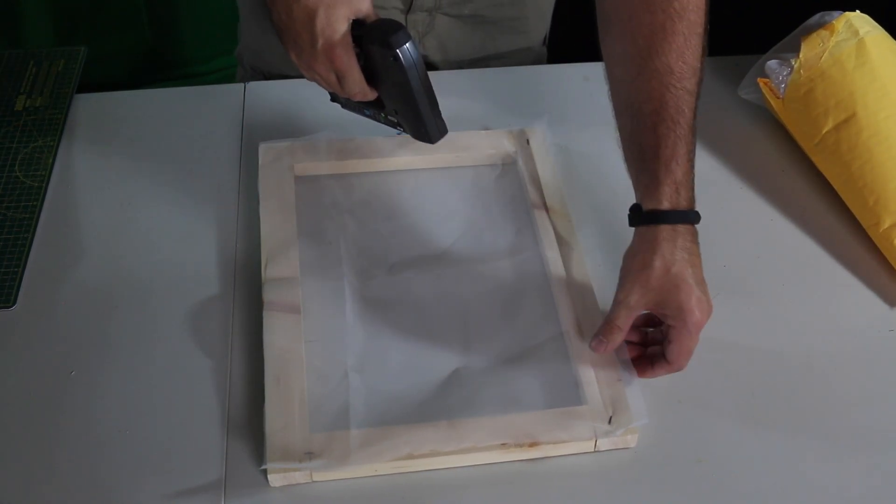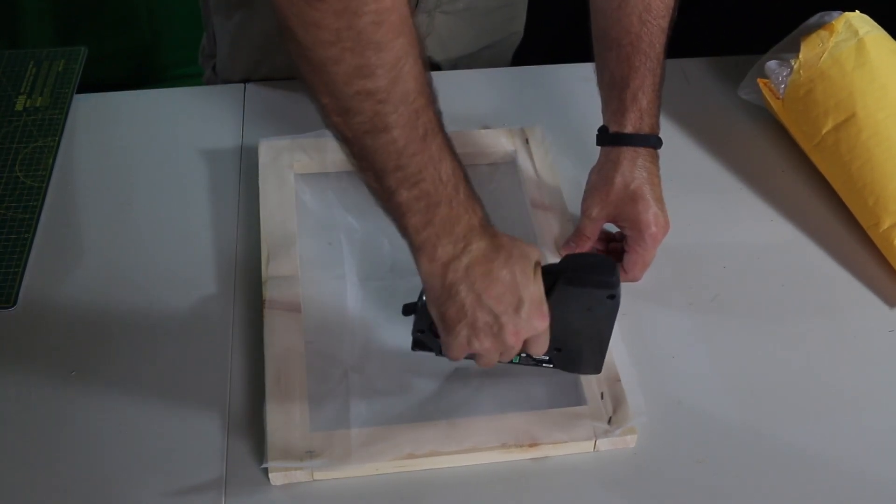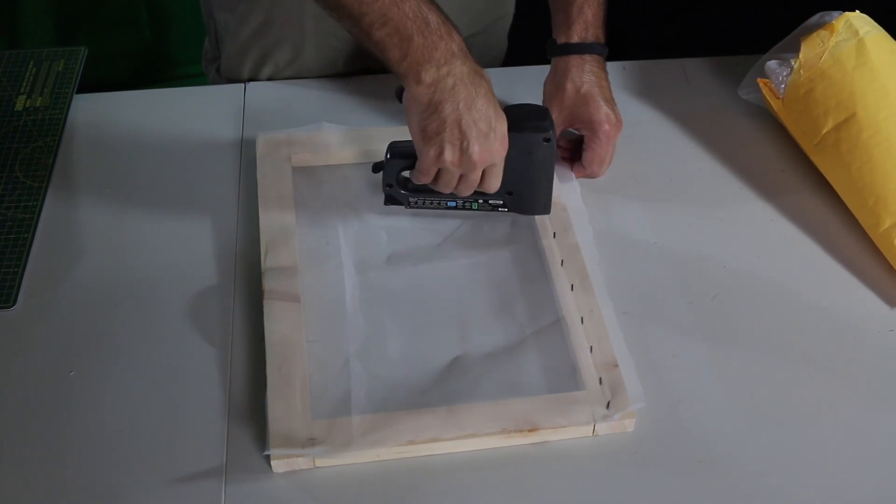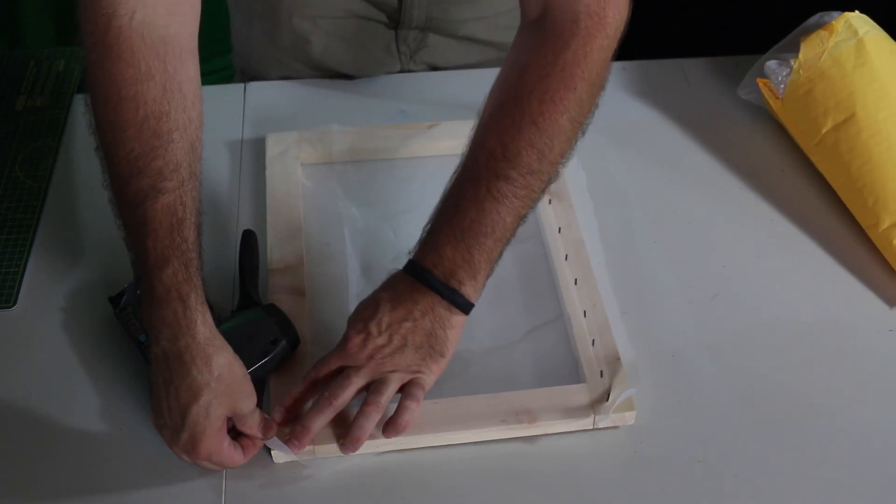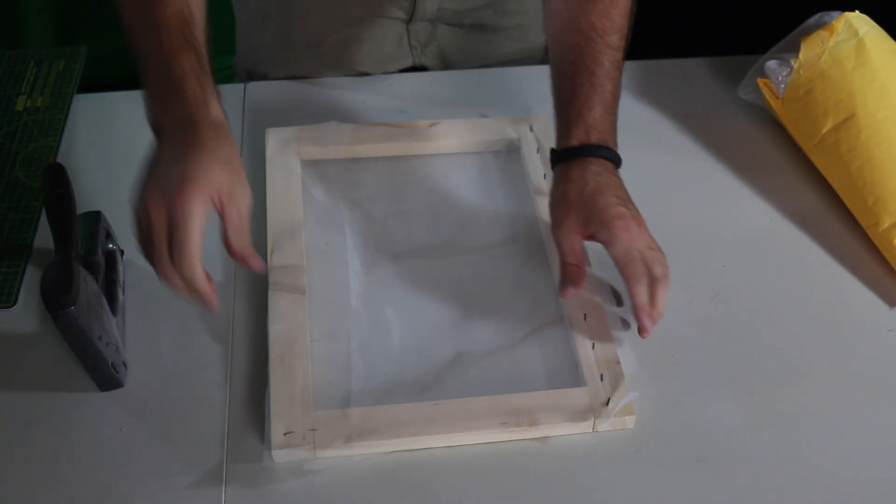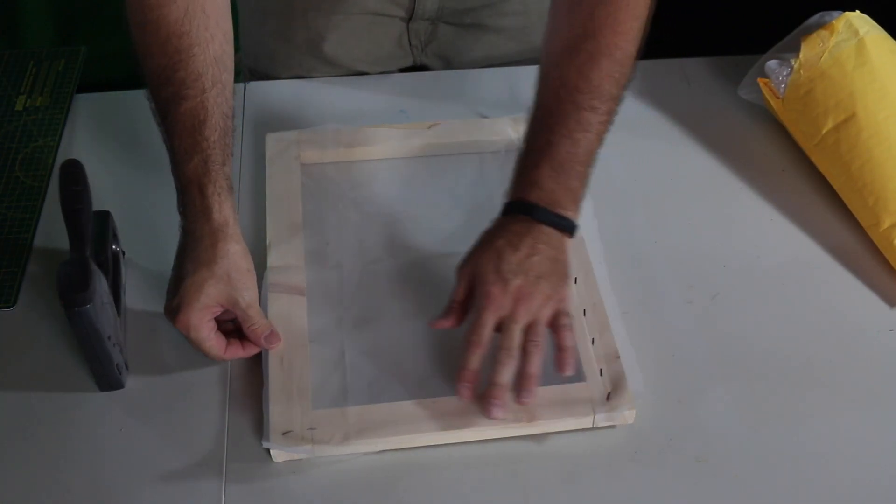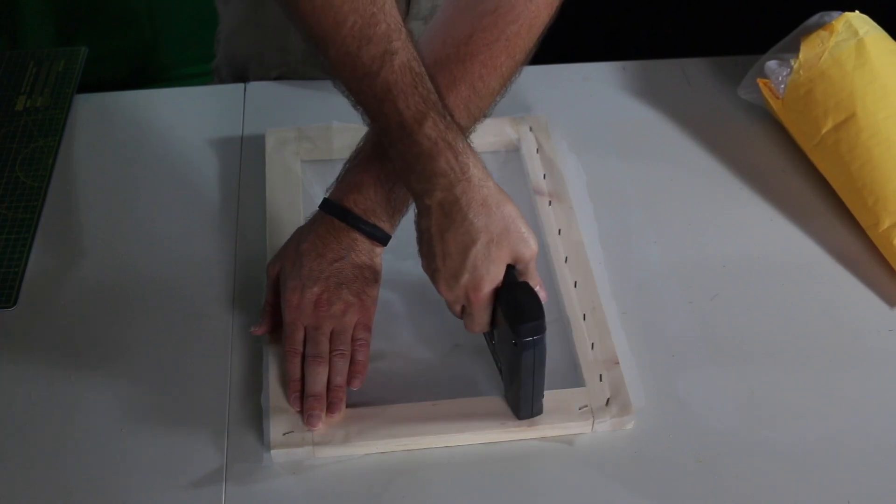And as you go down, staple, leaving them about an inch or two apart and you want to pull on it to keep it snug. Now we can move on to the other end and pull on it snugly there. Put a staple there and then go across.